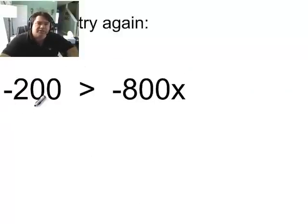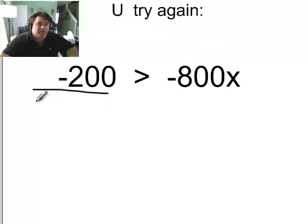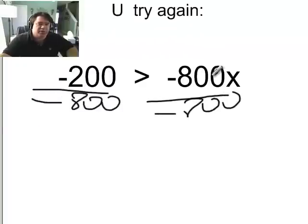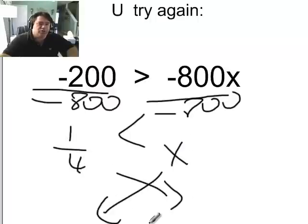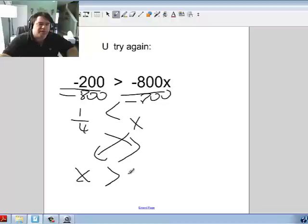Moving on. You try again. -200 > -800x. Go ahead. Pause. Let's see what you got. Divide both sides by -800. -800. Two negatives make a positive. Sign switches. This becomes 1/4. This becomes x, switch, switch. I get x switches back 1/4.